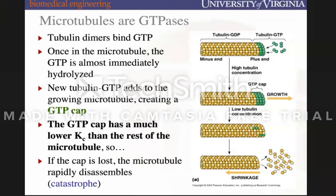Once the GTP cap is lost, you lose the advantage because the GTP cap lowers the critical concentration — think of it as a threshold. With the GTP cap present it lowers the threshold for what's needed for more monomer to be added. But as it uses up tubulin and hydrolyzes GTP to GDP, in the absence of the GTP cap the threshold elevates, and instead of polymerizing it starts disassembling.